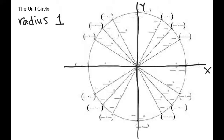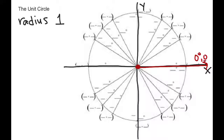The first thing we want to learn about the unit circle is where our special angles are. All the special angles on this unit circle have lines coming from them. We always start at something called initial position — the ray coming from the center of the circle going off in the positive x-axis direction. We say that is zero degrees or zero radians.